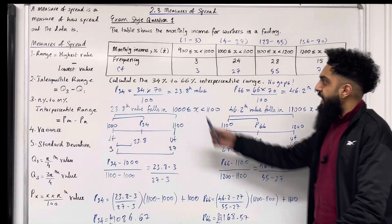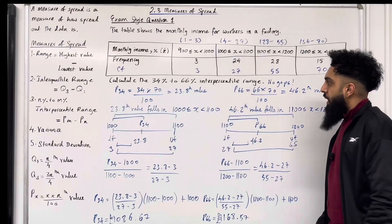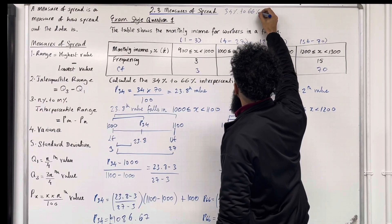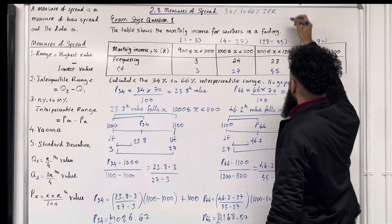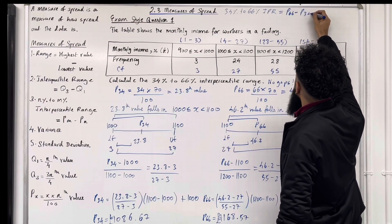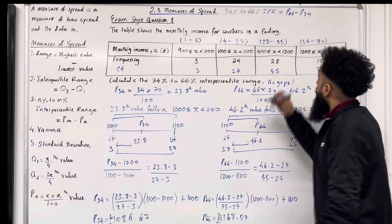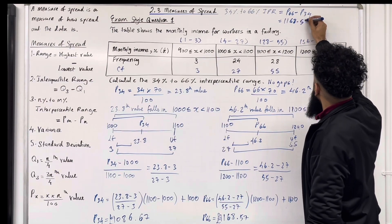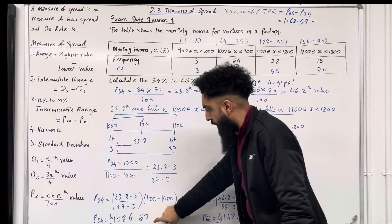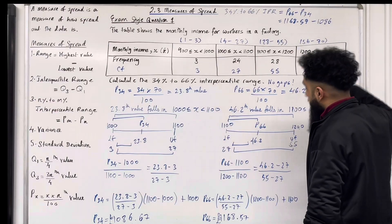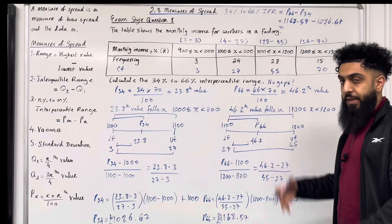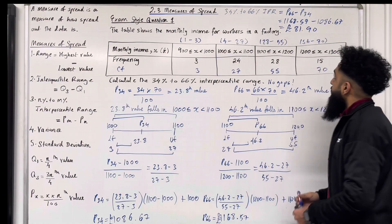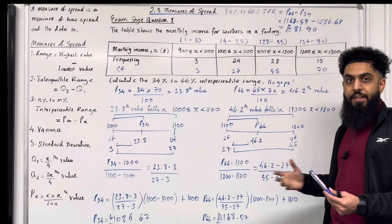Now we can calculate the 34% to 66% interpercentile range, shorthand IPR. This is given by P66 minus P34. So we have £1,168.57 take away £1,086.67. Putting this into the calculator, we get £81.90. So that is the final answer. This completes exam style question one.